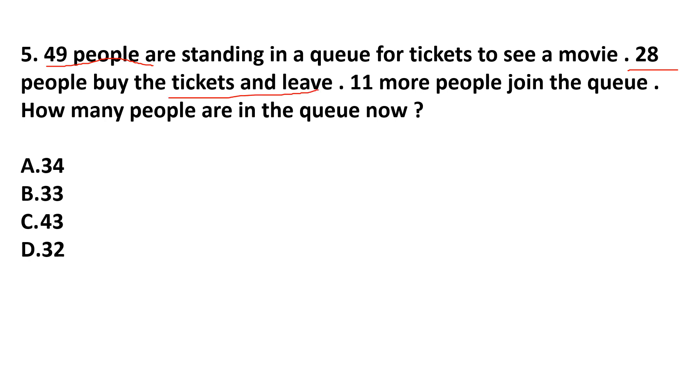First, we found out how many people are there after buying the tickets. 49 minus 28 is... 9 minus 8 is 1, and 4 minus 2 is 2. So total 21 people are there when 28 people left the queue. Next part is, 11 more people join the queue. Now, we add 11 to 21 and we get 1 plus 1 is 2 and 2 plus 1 is 3. So total 32 people are there in the queue now.